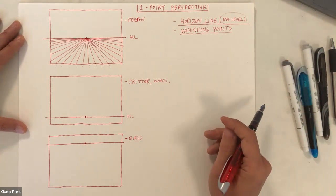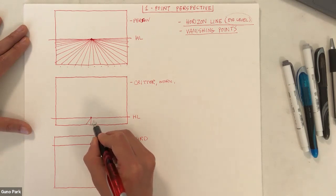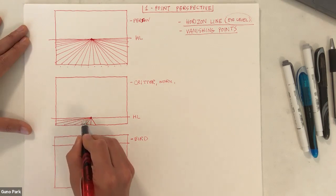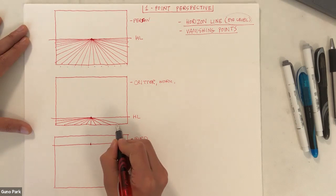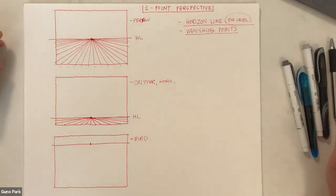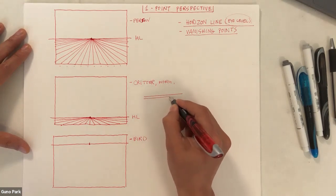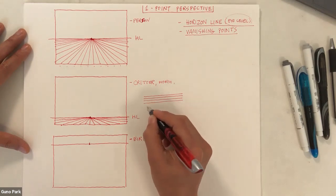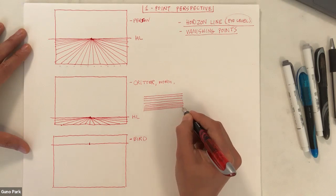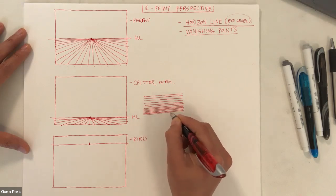Now I'll do the same for the critter view — there's less ground area to cover, but same idea: lines going to the vanishing point. You can use a ruler if you want, but I like to practice drawing straight lines freehand. I often do this in my sketchbook — drawing straight lines and cross hatching is really good practice for line control.